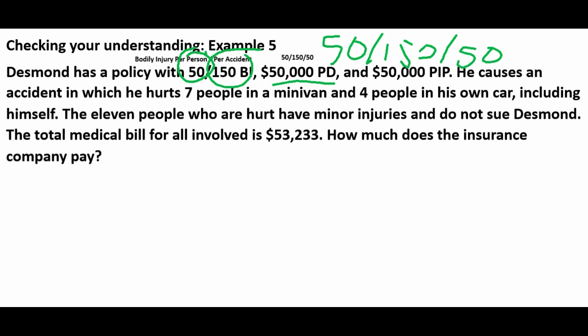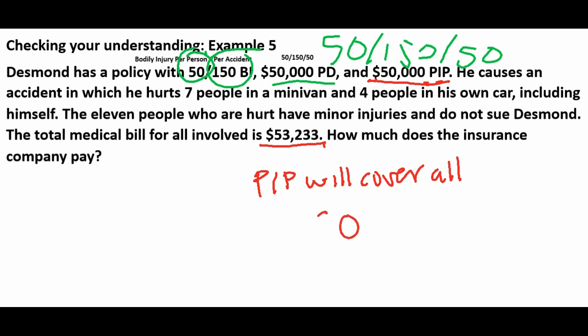Personal injury protection is a no-fault type of insurance, so it doesn't matter who's at fault - it kicks in for medical expenses right away. The limit is $50,000 per person per accident. We have 11 people injured, and assuming each individual claim is less than $50,000, the PIP policy covers the whole $53,233. The insurance company itself pays the entire amount through the PIP policy.